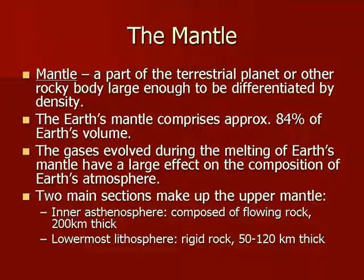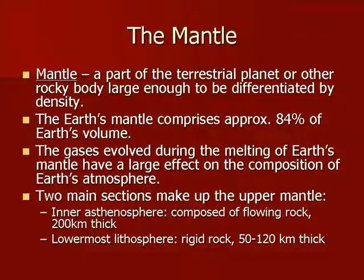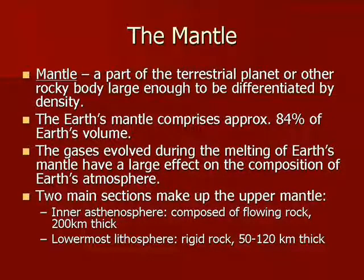The mantle comprises approximately 84% of the Earth's total volume. It is separated from the crust by the difference in density of the rocks that make up the crust and the mantle. Researchers believe that the mantle has a very strong effect on the type of atmosphere in the outer layers of the Earth. There are two main sections of the mantle, and by the end of the second video, you will be able to describe them.